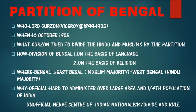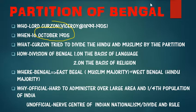When did this partition of Bengal take place? It took place on 16 October 1905. You need to remember this date with the year.